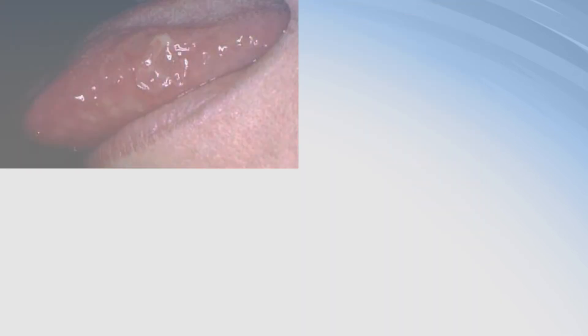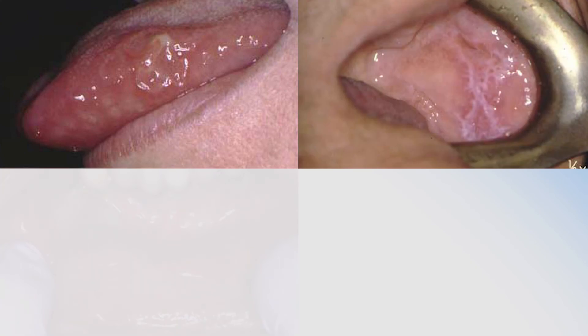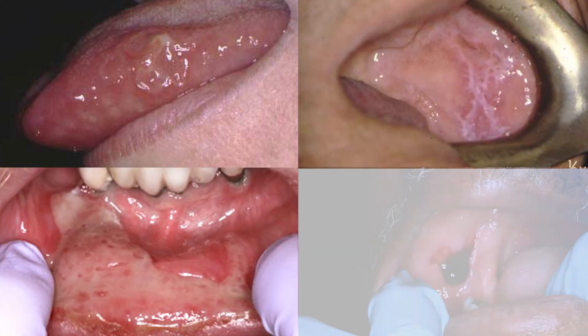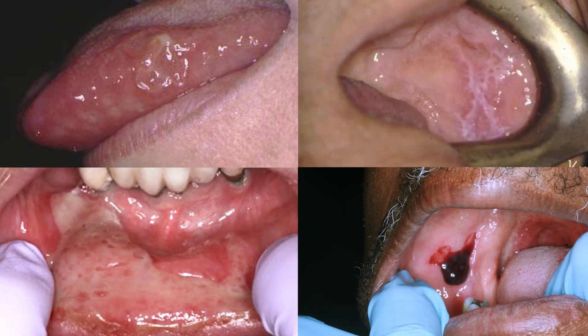About what? Aphthous ulcers, lichen planus, chronic ulcerative stomatitis, and benign mucous membrane pemphigoid. Some of those words you don't even know. Get this video.